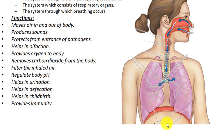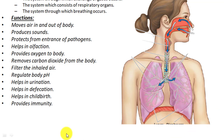The respiratory system also helps in defecation — the process of passing stool. When you defecate, you take in air to increase pressure inside your lungs, then the lungs apply pressure on the diaphragm, the diaphragm applies pressure on the abdominal viscera and intestines, and the large intestine is squeezed, passing out all undigested food. This process is called defecation.